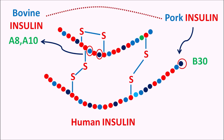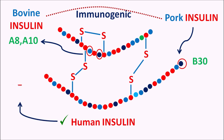Even though these amino acids are different, these preparations produce the same pharmacological effect as human insulin. However, animal insulin preparations are less recommended nowadays because they are immunogenic in nature — they can stimulate the immune system, resulting in hypersensitive reactions. That's why human insulin preparations are more preferred, and they can be made by recombinant DNA (rDNA) technology.